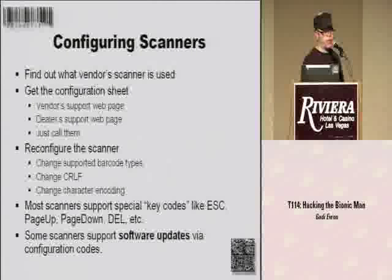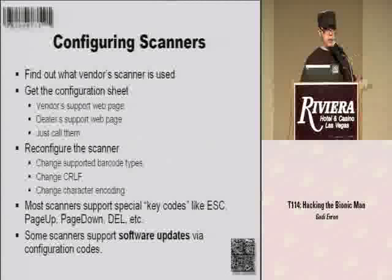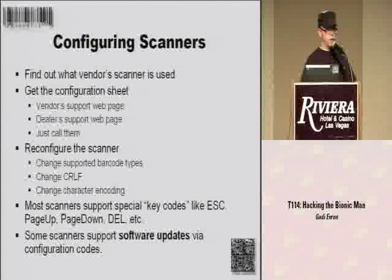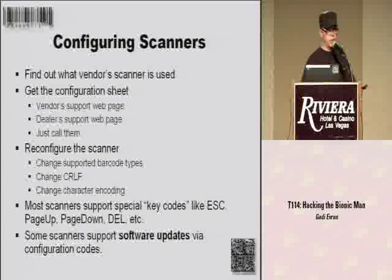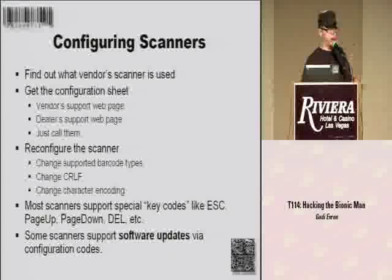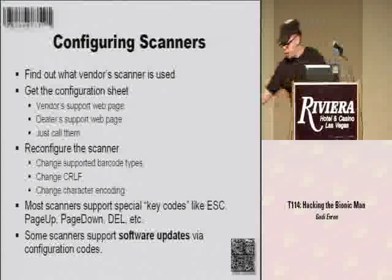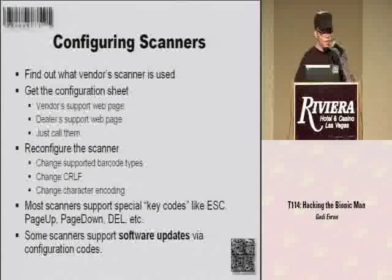Essentially what you do is go to the vendor's page — many vendors post their configuration barcodes on their website — and then you reconfigure the scanner. You can change the supported barcode types, which means a system that formerly thought it was only accepting UPC barcodes will suddenly accept all types of barcodes. Because all scanners support all barcode types — you don't buy a separate scanner for UPC. The chipsets became so cheap that all scanners support all barcodes, and you have to configure them away. So the system that used to only accept UPC will suddenly accept pretty much everything you feed it. Not good.